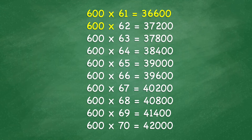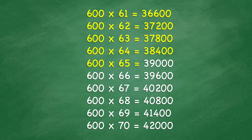600 x 62 equals 37,200. 600 x 63 equals 37,800. 600 x 64 equals 38,400. 600 x 65 equals 39,000. 600 x 66 equals 39,600.